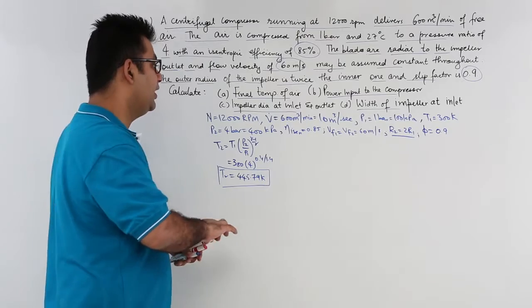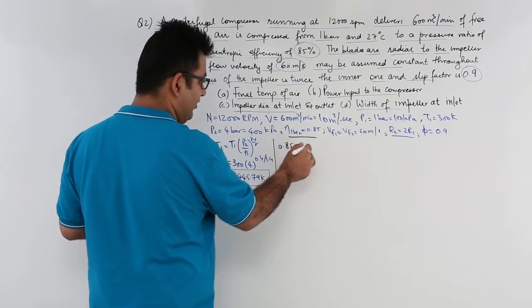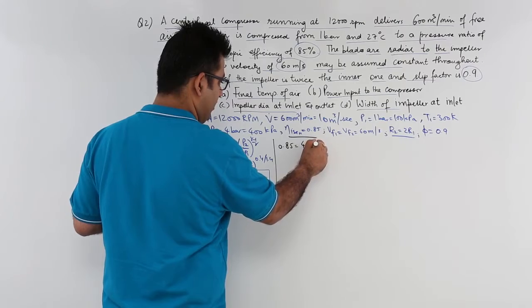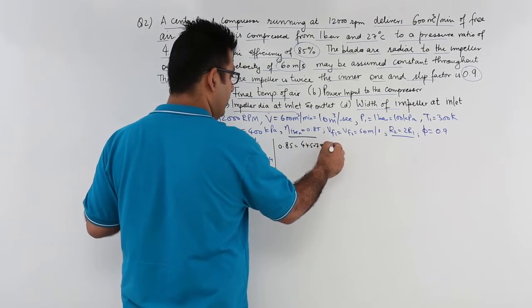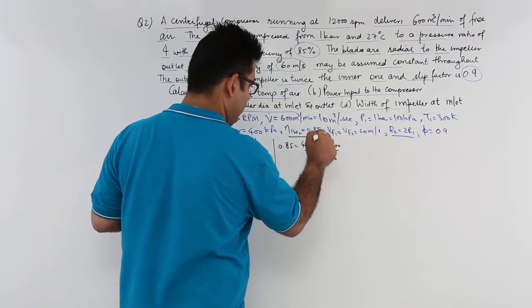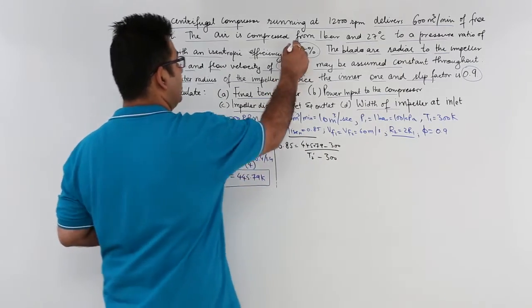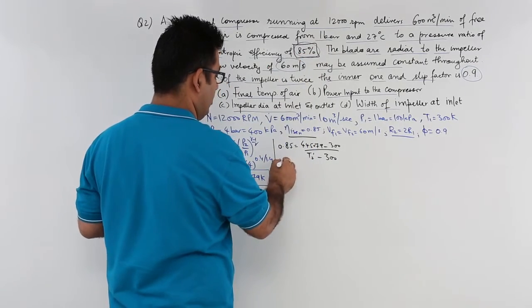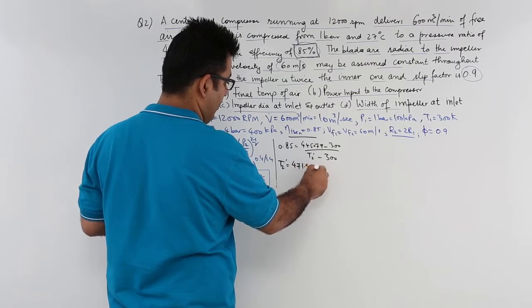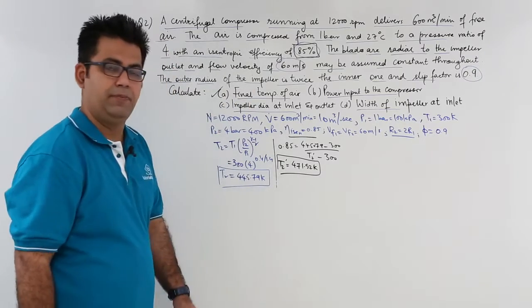Now we are given the isentropic efficiency. So if you apply this formula, 0.85 is equal to the ideal temperature rise that is T2 minus T1, so 445.79 minus 300, divided by the actual delta T which is T2 dash minus T1. So from this equation I can easily find out T2 dash, that would be the final temperature of air after compression given that your isentropic efficiency is 85%. So T2 dash is approximately 471.52 Kelvin. So this is your final temperature of air. We are done with this particular part of the question.